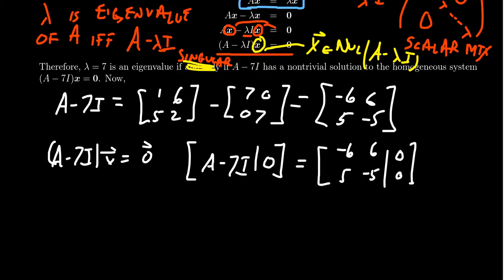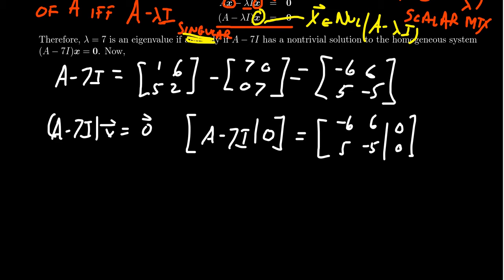Because for a homogeneous system, as we row reduce, this isn't ever going to change anything. Some things to notice very quickly is that the first row, everything's divisible by 6. So I'm going to divide everything in the first row by negative 6. In the second row, everything's divisible by 5. So I'm actually going to divide everything by 5, just for convenience there.